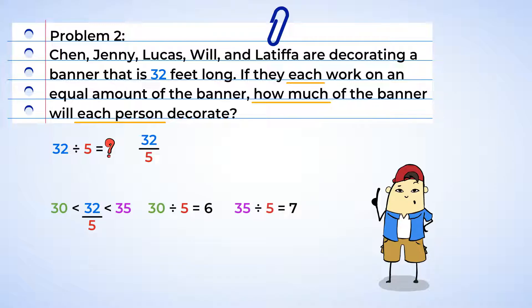Now back to our problem at hand. There are six groups of five in 30, so we have six wholes and two-fifths left. Each person will decorate six and two-fifths feet of the banner. Whew, I got a good start on it. I can't wait to see how the banner turns out. Fantastic work, friends. Keep it up.